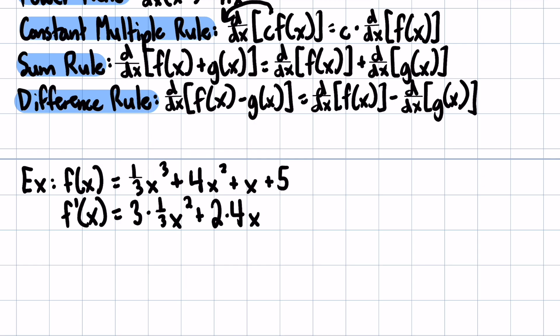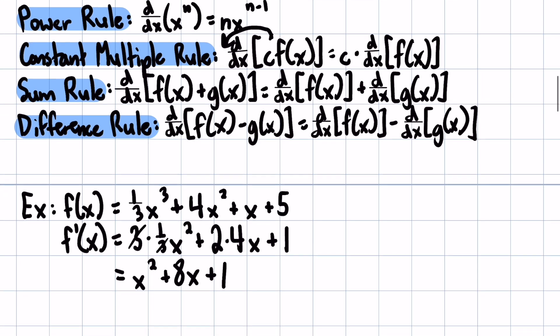And then the derivative of x with respect to x is just 1. And then for the 5, the derivative of any constant is 0. So we can simplify this a bit. And we just get x squared plus 8x plus 1. And that will be our derivative. So we got to see a couple of those rules in action.